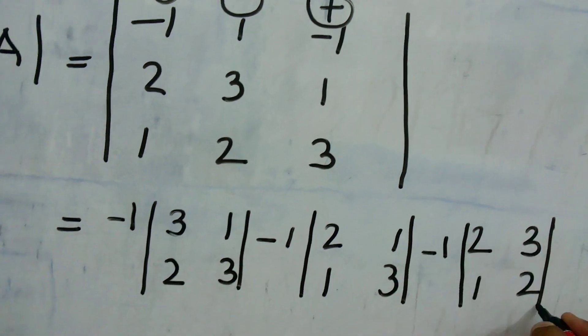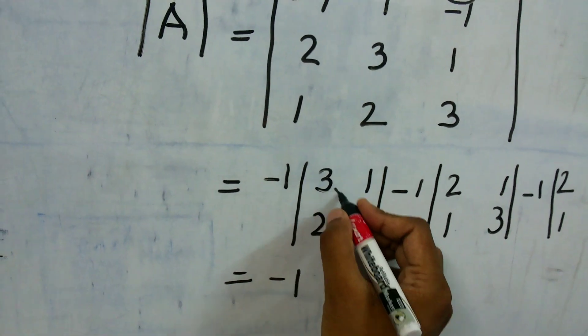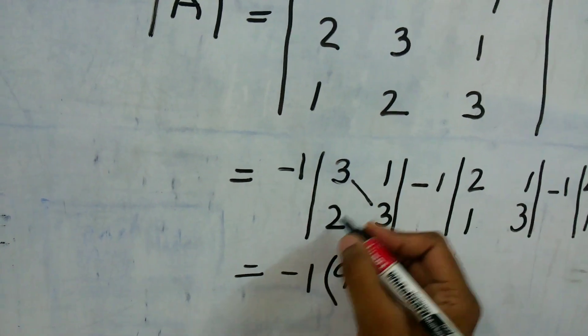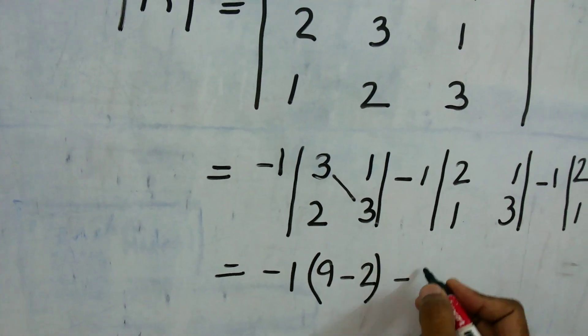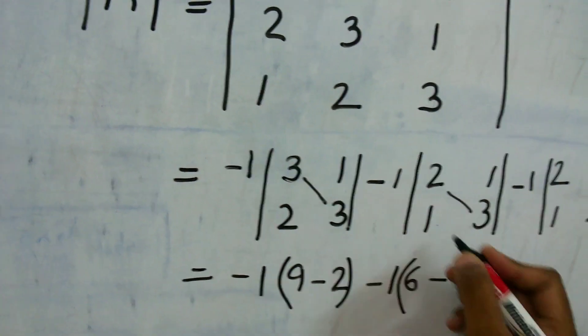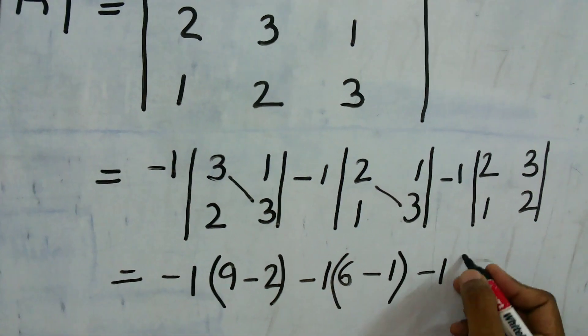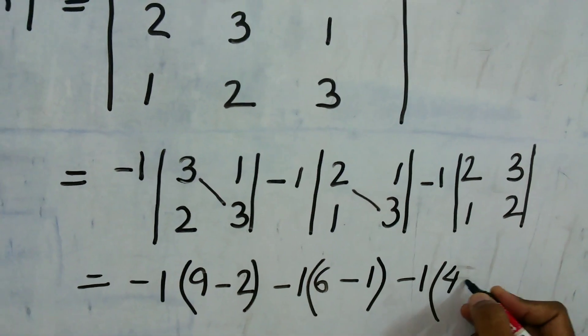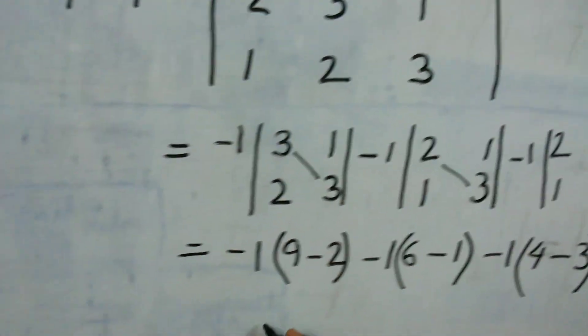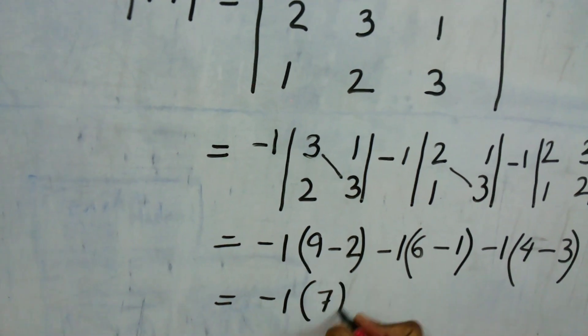So now once we solve this, this will be minus 1, 3 into 3 that is 9 minus 2 into 1, 1. Then again 2, 3 is 6 minus 1 into 1. Then minus 1, 2, 2 is 4 minus 1, 3 is 3.